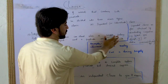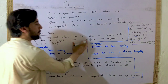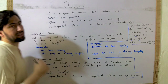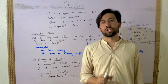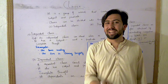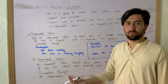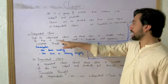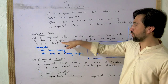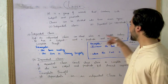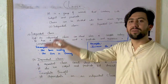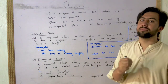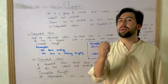An independent clause is a complete sentence. If you have a complete thought, then you express the whole meaning. So the whole group of words is an independent clause. So, if you have a complete sentence, if you have a subject and predicate, if you have a complete thought, you can express it as an independent clause.